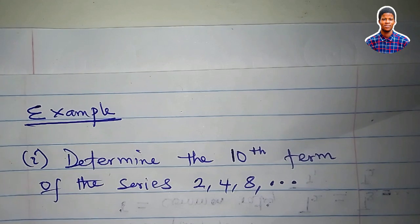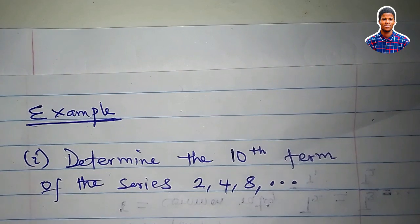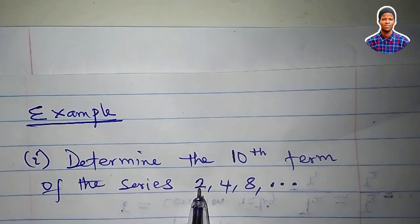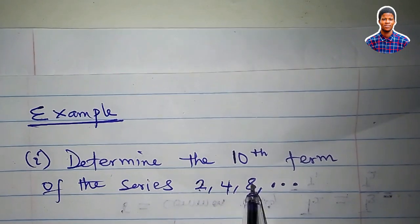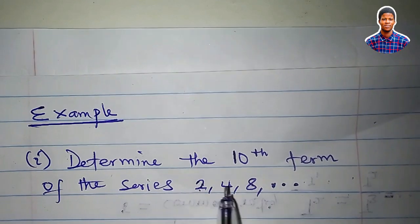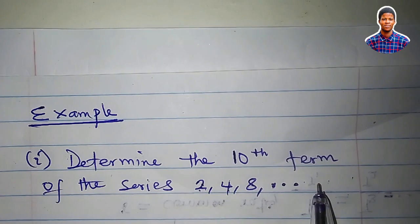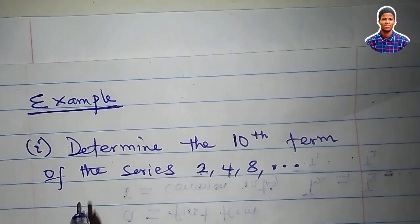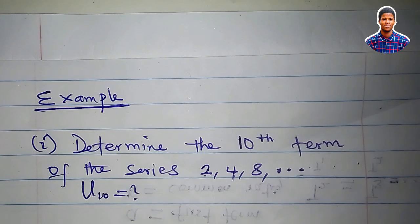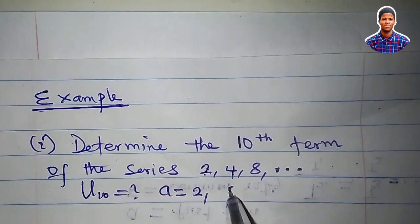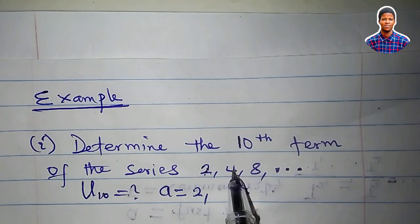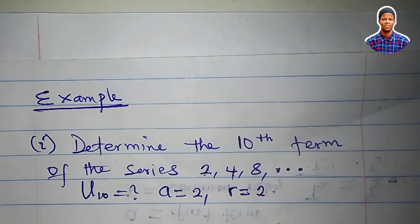In this example, I want to determine the 10th term of the series 2, 4, 8. By inspection, you can see that 2 times 2 gives 4, and 4 times 2 gives 8. So the common ratio is 2. The first term is 2, and the common ratio is confirmed: 4 divided by 2 is 2, and 8 divided by 4 is 2.